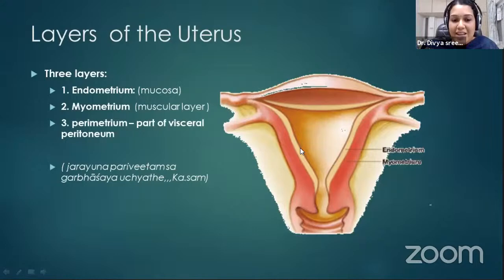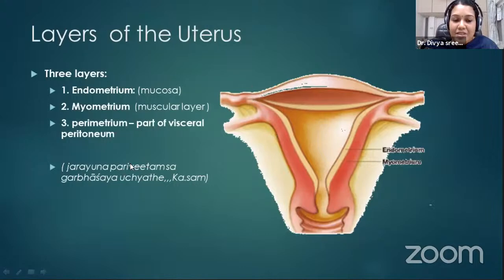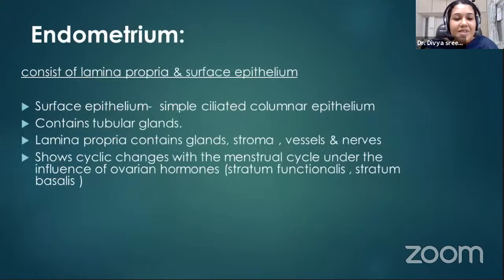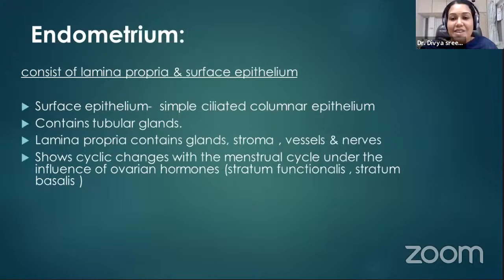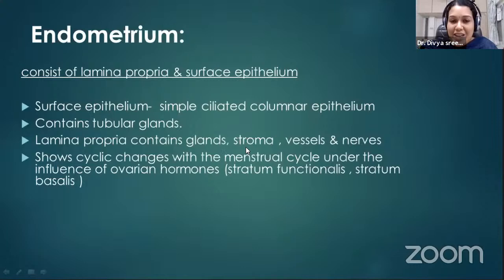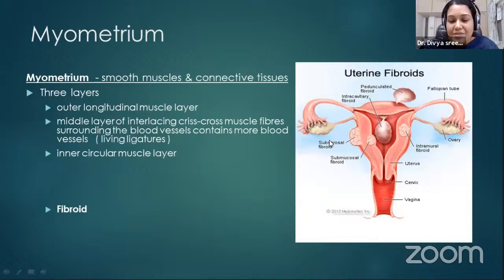The uterus has three layers: the endometrium (innermost), the myometrium (middle), and the perimetrium (outermost), which is contributed by the peritoneum. The endometrium consists of lamina propria and surface epithelium, with two sublayers — stratum basalis and stratum functionalis. The functional layer is shed during each menstruation. The surface epithelium contains ciliated columnar epithelial cells, and the lamina propria contains endometrial glands, blood vessels, and nerves. These undergo cyclic changes under the influence of estrogen and progesterone secreted from the ovary.